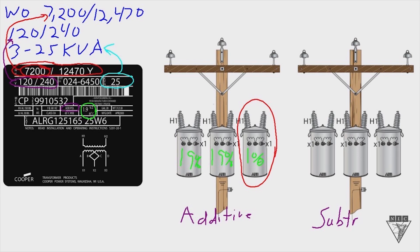So the reason why this is important is if you've got, let's say, two transformers that are additive and one transformer that's subtractive polarity, electrically you can connect it and make it work, but it's going to be a different type of connection than the traditional connection.